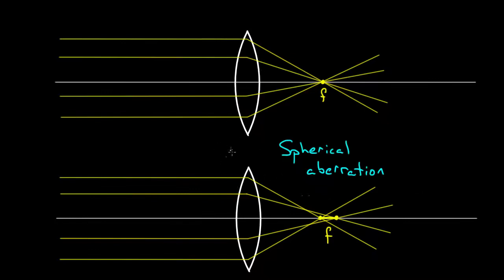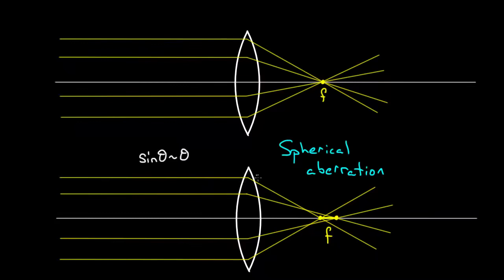Spherical aberration happens because of why we always call these thin lenses — if they're thin, all the angles involved for the normal lines are small. And for small angles, physicists use the approximation that sine theta is approximately just theta. With that approximation, all the rays go basically through the focal point. But there's a difference between basically and exactly, and the farther up the lens, the larger the angle and the more deviation you get. It's an inherent problem with spherical lenses.